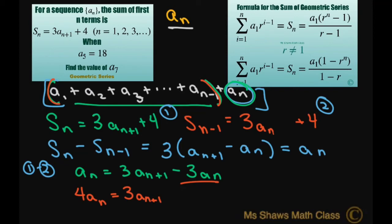So that means if I solve for a sub n plus 1, that's going to give you 4 thirds a sub n. This is when you have more than 2 or more terms.